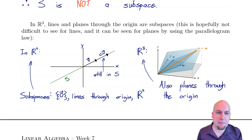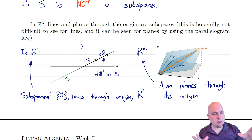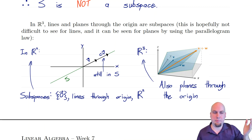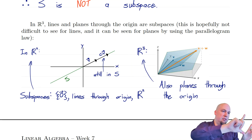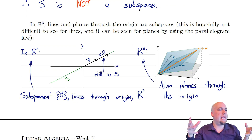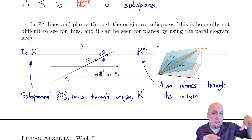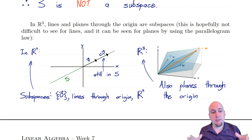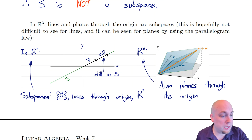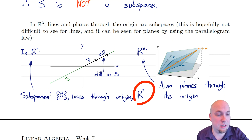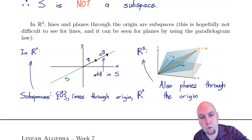In R3, one more possibility arises: a plane through the origin. Scalar multiplication keeps a vector on the same plane, and by the parallelogram rule, adding two vectors on the plane gives a vector pointing to the far corner of the parallelogram, which is still on the plane. So planes through the origin are subspaces. In R3, the only subspaces are: just the zero vector, a line through the origin, a plane through the origin, or all of R3.